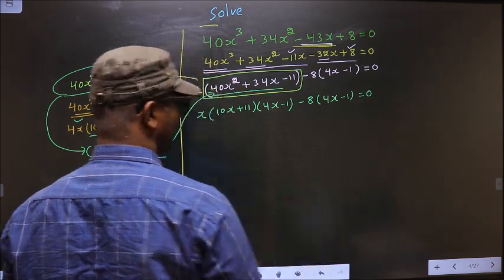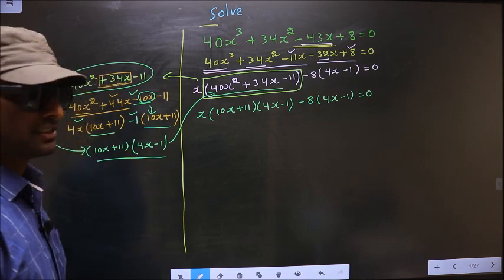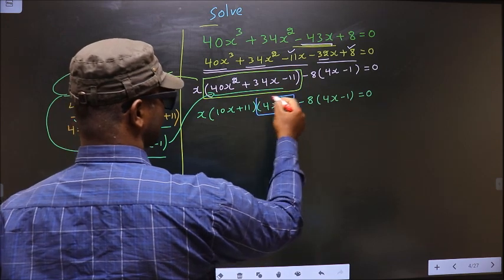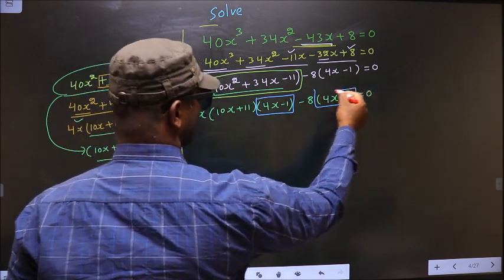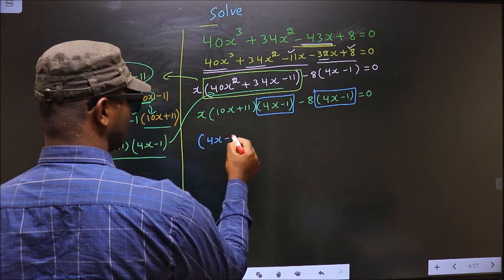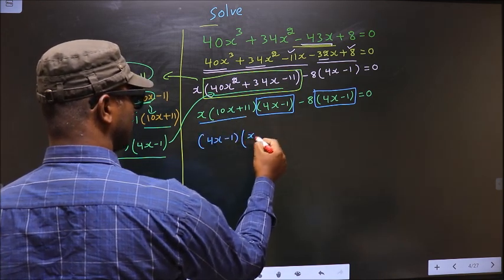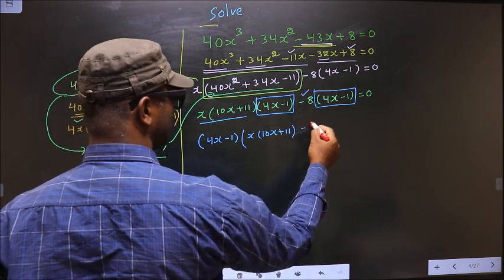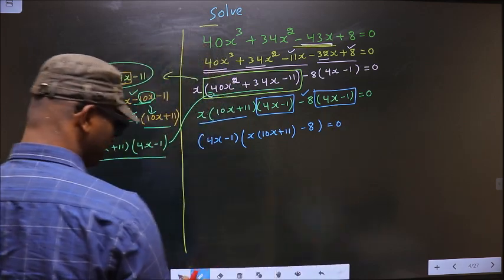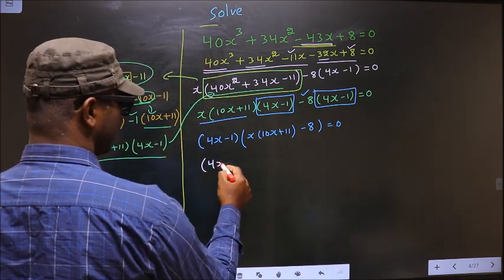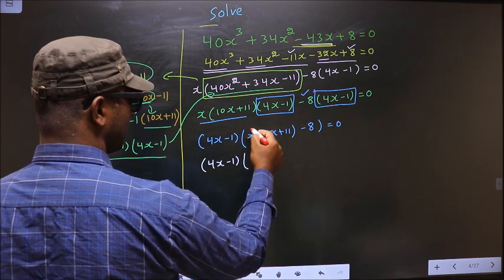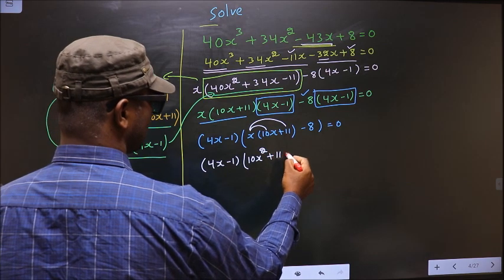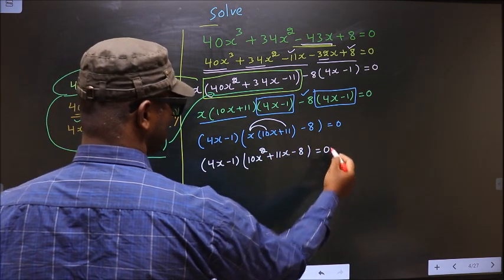Now from this entire equation what can you take out common is 4x minus 1. So 4x minus 1 outside. Here you are left with x times 10x plus 11, and here you are left with minus 8 equal to 0. Now 4x minus 1 — here you open up the bracket — you get 10x square plus 11x minus 8 equal to 0.